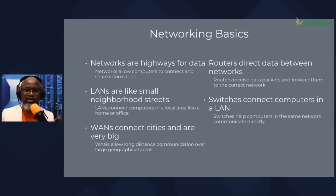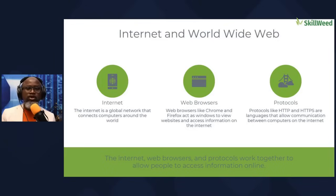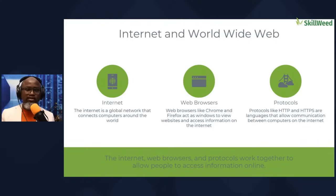Two things to take away: the router helps us forward to the correct network, and switches collect different devices together so they can effectively communicate within the network. We can all agree the internet and web browser are what everybody uses today. Within the worldwide web, we talk about protocols. When you browse, we all use HTTP or HTTPS. If you don't see the S, which means secure, it means it's not a secure link — so be careful. These are languages used to communicate on the internet. There are many other protocols out there.